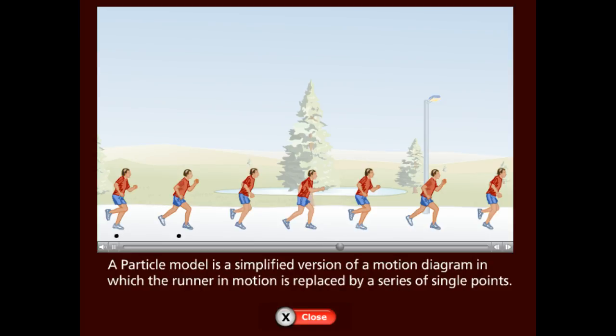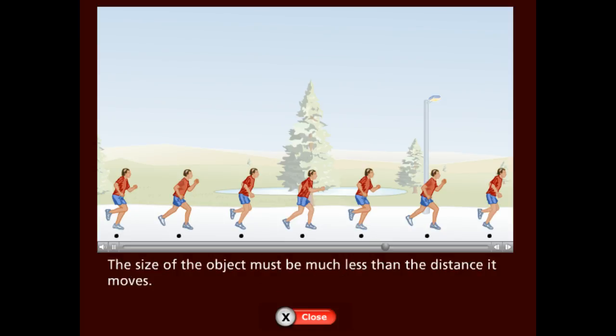A particle model is a simplified version of a motion diagram in which the runner in motion is replaced by a series of single points. The size of the object must be much less than the distance it moves.